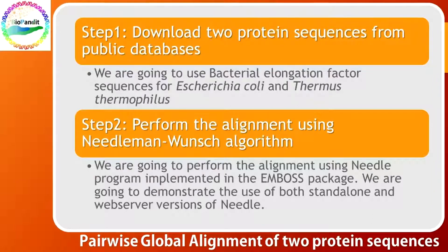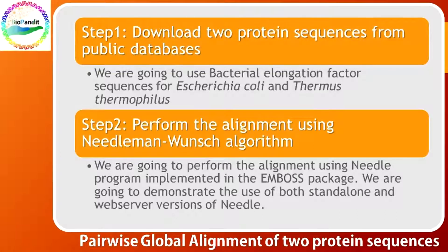This analysis has two parts. First, to download two protein sequences from public databases. We are going to use the bacterial elongation factor sequence. This protein is crucial to the elongation phase of mRNA translation into functional proteins. We are going to collect its sequences for two bacteria, Escherichia coli and Thermus thermophilus.